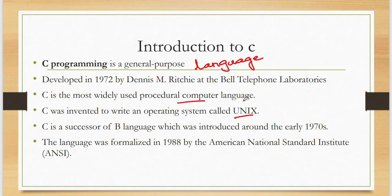C was invented to write an operating system called Unix. Using C, we can write an operating system called Unix. An operating system is mainly the interaction between the user and the computer hardware. So we can write an OS using C programming language — see how powerful this language is!